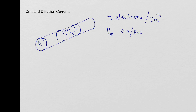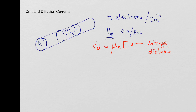This drift velocity Vd actually depends on the mobility of the electrons in that material — the mobility of electrons — multiplied by the electric field. The electric field is nothing but the voltage divided by the distance. So that is electric field E. They start moving at a drift velocity Vd centimeters per second.